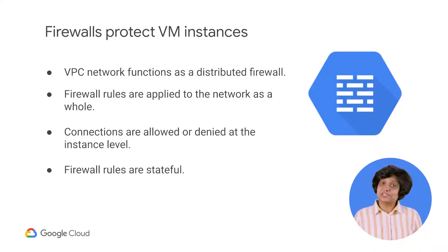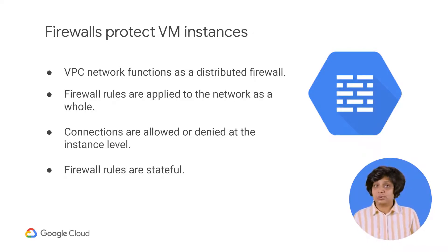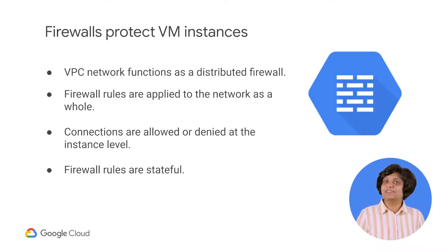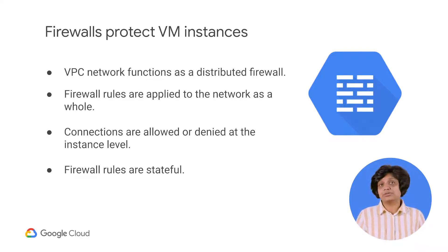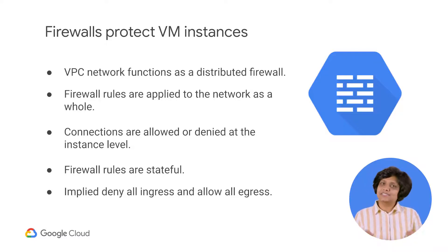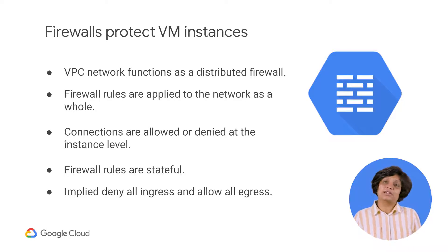GCP firewall rules are stateful. This means that if a connection is allowed between a source and a target, or a target and a destination, all subsequent traffic in either direction will be allowed. In other words, firewall rules allow bidirectional communication once a session is established. Also, if for some reason all firewall rules in a network are deleted, there is still an implied deny all ingress rule and an implied allow all egress rule for the network.